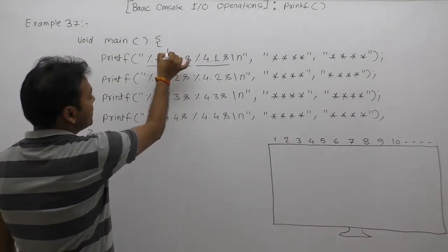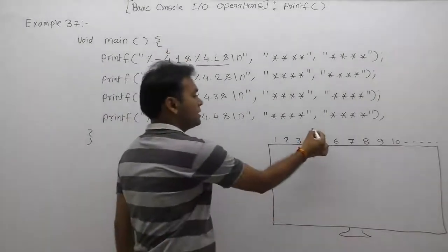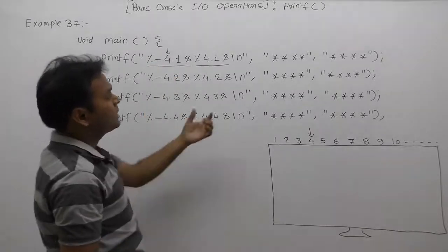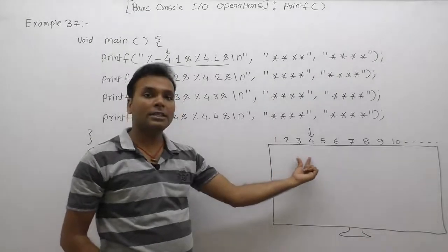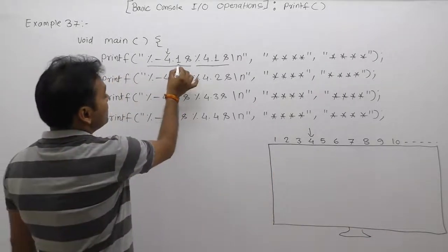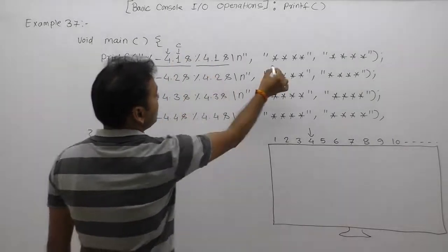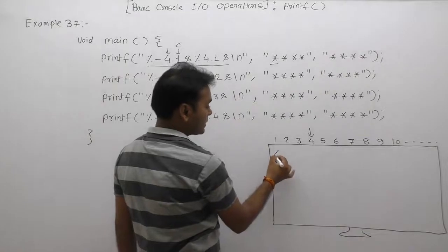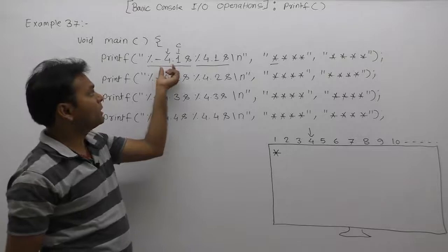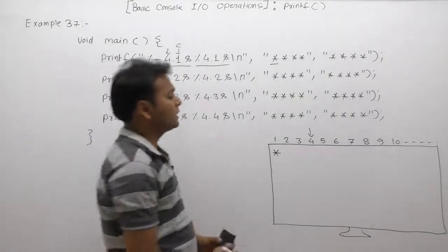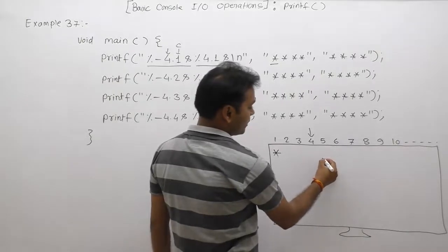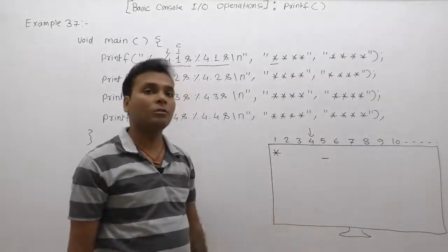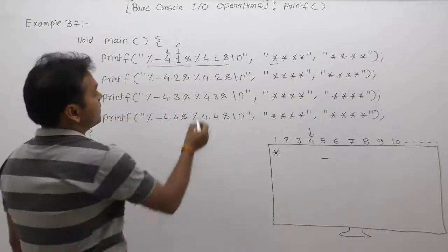For the first format specifier, we are using a width value of four, so the string will be displayed in four character positions. The flag value is minus, meaning the string is left-justified. The character precision value is one, so it reads only the first character from the string — displaying one star. After displaying, the cursor will be at the fifth column position.